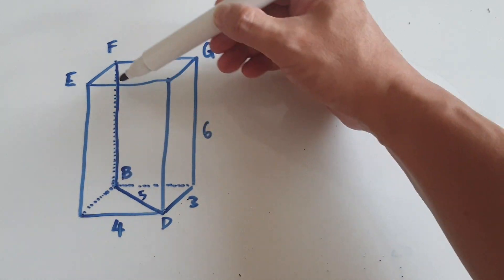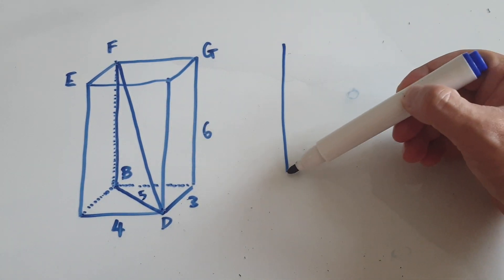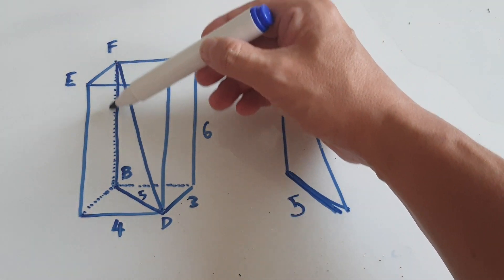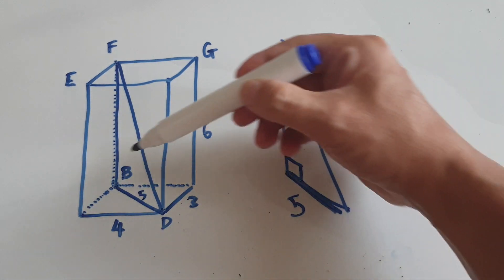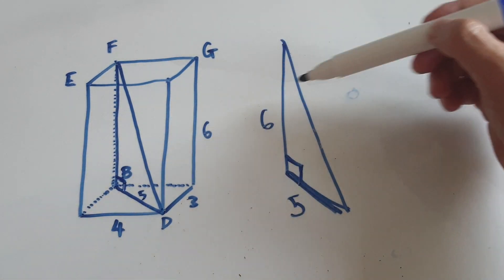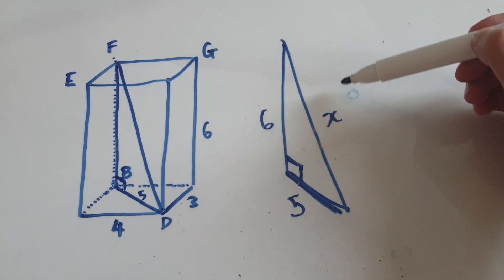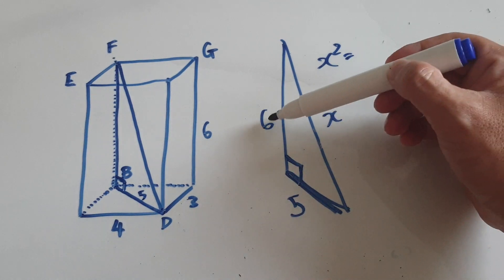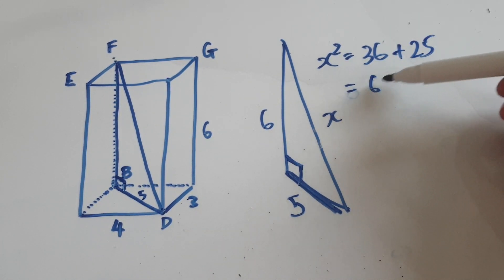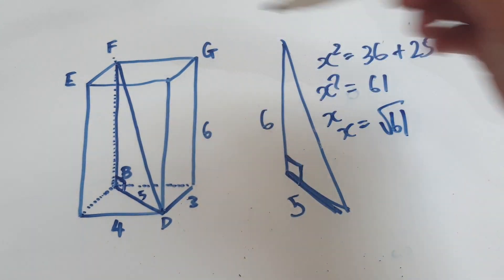So now you can use this triangle here. FD goes from one end to the other, so what you've got is a right-angled triangle. This diagonal length here is 5, and the height of the cuboid is 6. If you look carefully, that is a right-angled triangle — you just have to visualize it. The right angle is right here. Using Pythagoras: x squared equals 6 squared which is 36, plus 5 squared which is 25. Add the two together: 61. So x equals root 61. That's the longest length from one corner to the other — it is root 61.